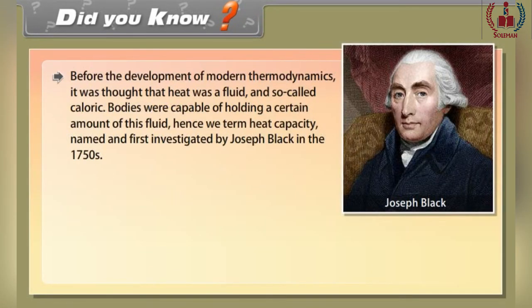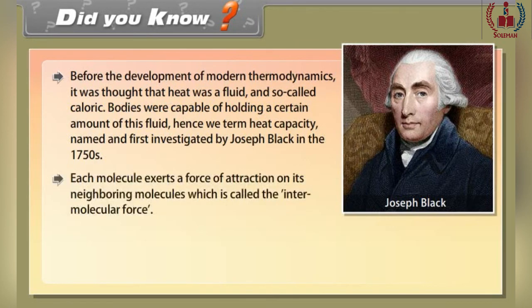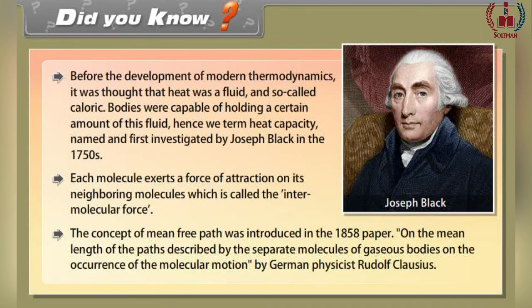Did you know: before the development of modern thermodynamics, it was thought that heat was a fluid called caloric. Bodies were capable of holding a certain amount of this fluid — hence the term heat capacity, first investigated by Joseph Black in the 1750s. Each molecule exerts a force of attraction on its neighboring molecule, called the intermolecular force. The concept of mean free path was introduced in an 1858 paper by German physicist Rudolf Clausius, titled 'On the mean length of the path described by the separate molecules of gaseous bodies on the occurrence of molecular motion.'